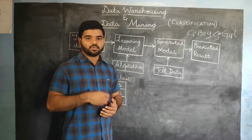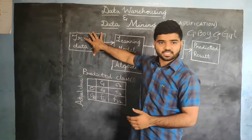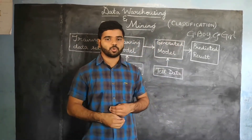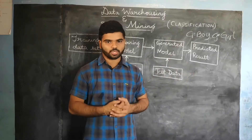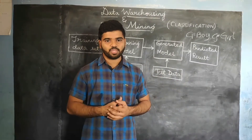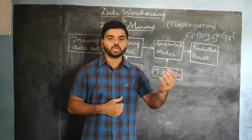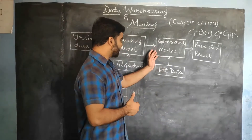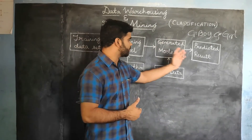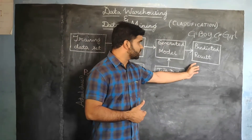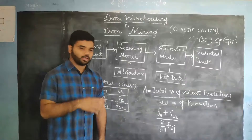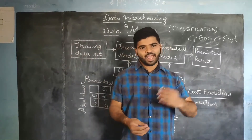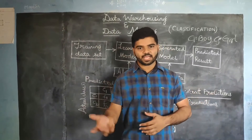Now we are going to test the baby or the system by giving some test data that is not part of the training data set. We show some unknown person and ask the baby whether he or she is a boy or a girl. The baby or the system is going to predict whether it is a boy or a girl. Here, boy and girl act as class labels.